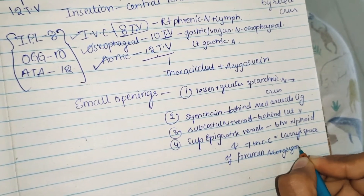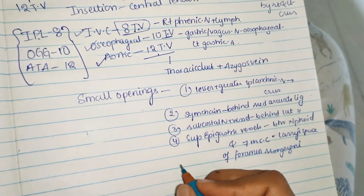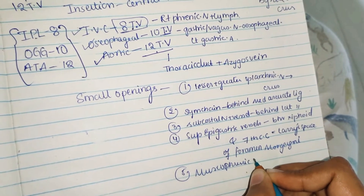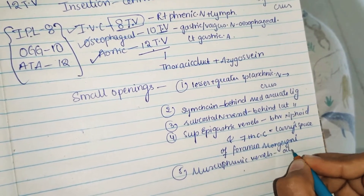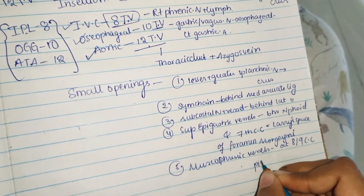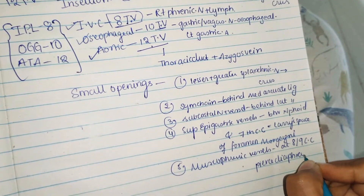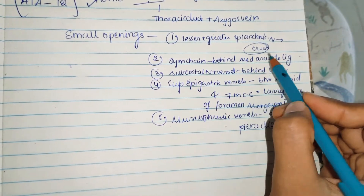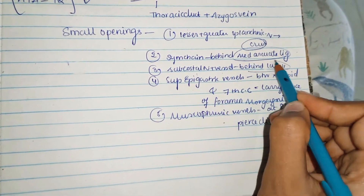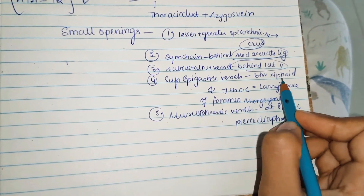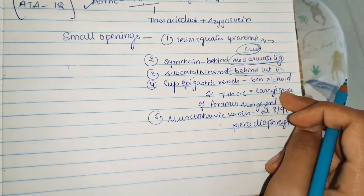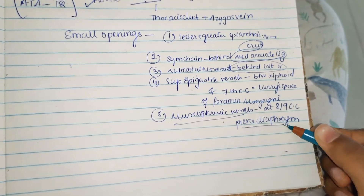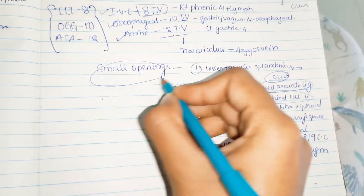The musculophrenic vessels pierce the diaphragm at the 8th or 9th costal cartilage. To summarize the small openings: lesser and greater splanchnic nerves through the crura; sympathetic chain behind the medial arcuate ligament; subcostal nerves and vessels behind the lateral arcuate ligament; superior epigastric vessels through Larrey's space (foramen of Morgagni); and musculophrenic vessels at the 8th or 9th costal cartilage.